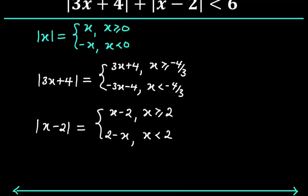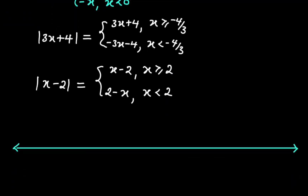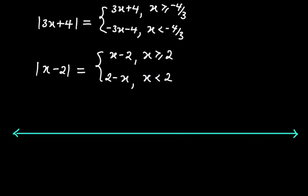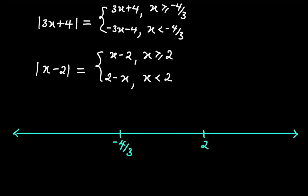We are going to analyze these cases using the number line. We will partition the number line into three regions using the critical values negative 4 over 3 and 2.